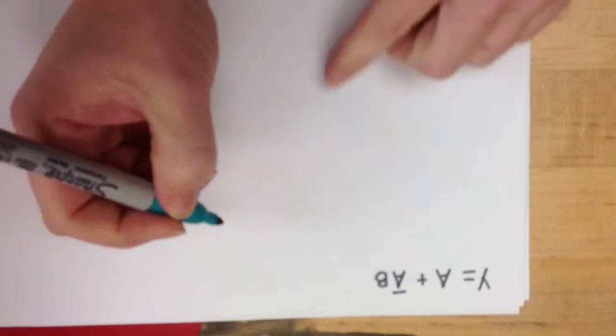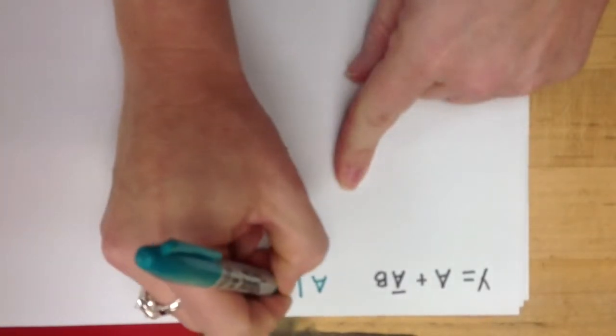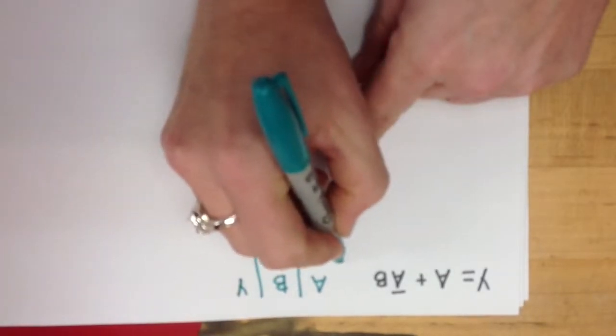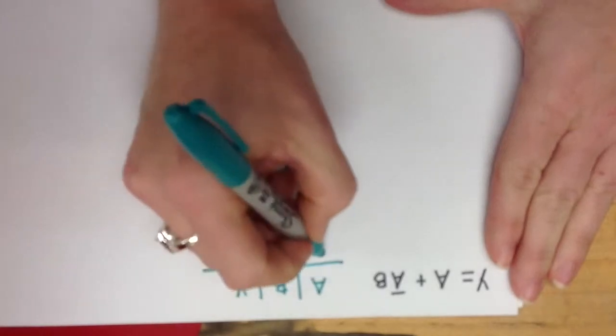Let's start with, this is a two input, so I need to make the truth table. Alright, and I've got my two inputs and my output there.